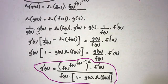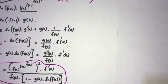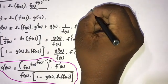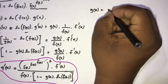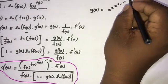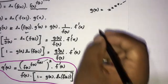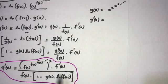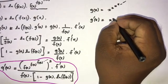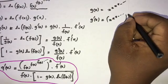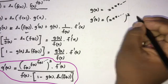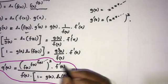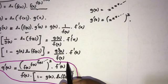Now let's look at examples. First, take g of x equal to x to the x to the x to the x going to infinity. Using our formula, g'(x) equals [x^x^x^x...] squared, and since f(x) = x, f'(x) = 1.